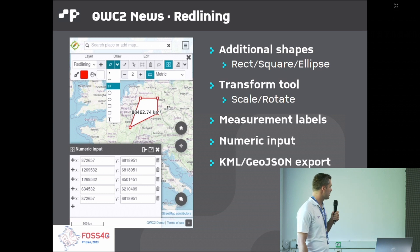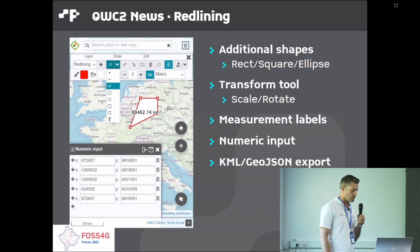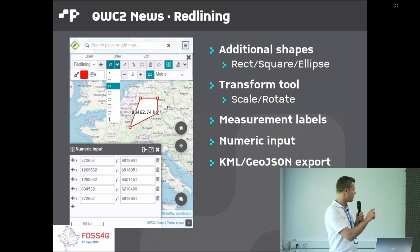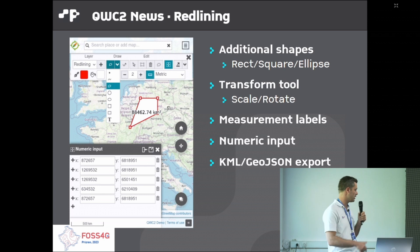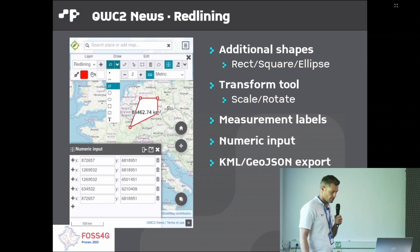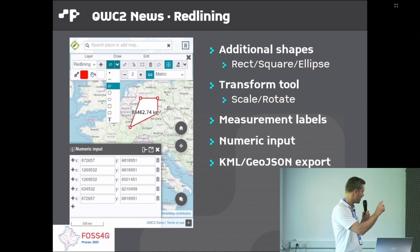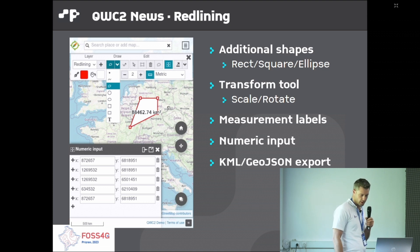We've greatly expanded the redlining functionality to include new shapes: rectangles, squares, and ellipses. We've added transform tools to scale and rotate figures. You can now display measurement labels directly in the drawings, as opposed to only in the measure tool. We've added a numeric input widget to numerically enter the coordinates of the geometry, and an export functionality to export drawings to KML and GeoJSON.